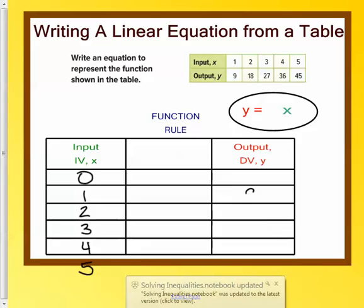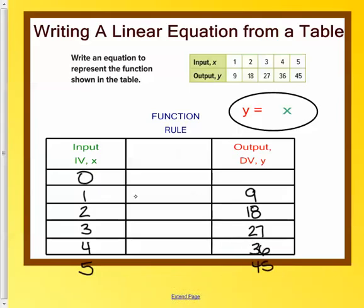And then I know that when the input is 1, my output is 9, 18, 27 for 3, and excuse me, 36 for 4, and 45 for 5.